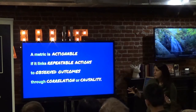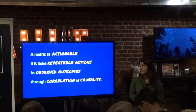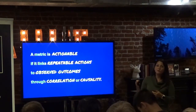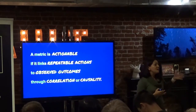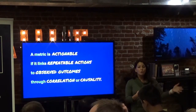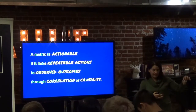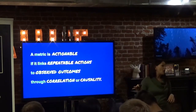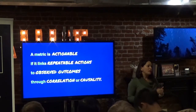The first thing I think about is what am I trying to do? What's the action, what's the change I want to take? When you're thinking about metrics, it's really about finding the ones that are actionable because it links a repeatable action — something that you can do, or that your users will do, or that your customers will do — and that action you're going to change how they take is going to yield an outcome that you can also measure. So you're linking these things, and that link should be through correlation and causality.